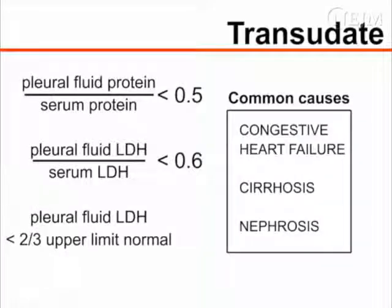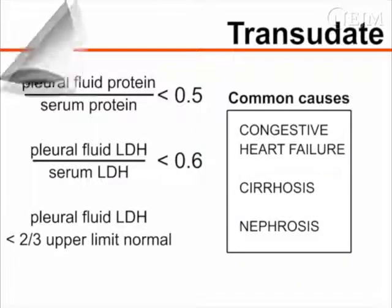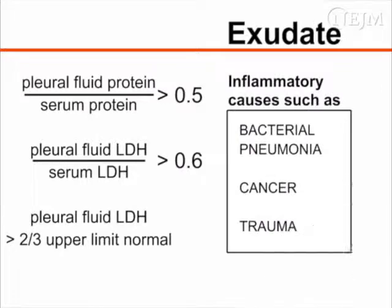Analysis of the pleural fluid will help differentiate a transudate, which is commonly caused by congestive heart failure or cirrhosis, from an exudate, which may be caused by processes such as bacterial pneumonia, cancer, or trauma.